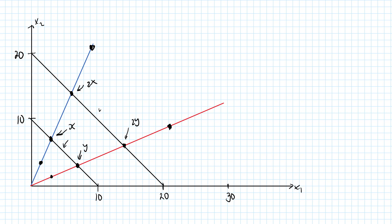Here is the bundle 3x where I have tripled each amount of the original x bundle, and here is the 3y bundle. These two bundles will also lie on the same indifference curve. Here is one half of my x bundle and one half of my y bundle.